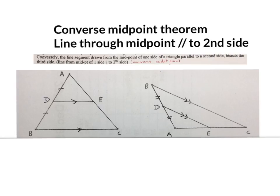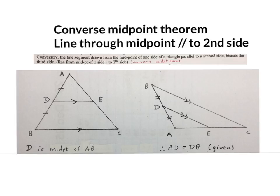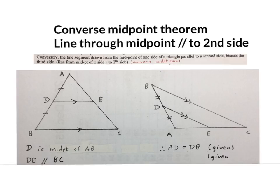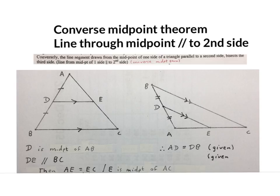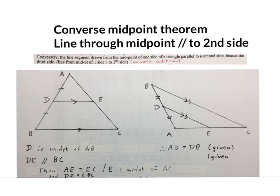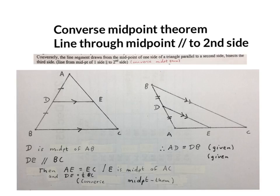That will mean AE is equal to EC. If we see a sketch like this we will write 'D is the midpoint of AB' or 'AD is equal to DB — given.' Then we write 'DE is parallel to BC — also given.' Then we write 'AE is equal to EC' (E is the midpoint of AC — not frequently used) and 'DE is half of BC.' Your reason must be: converse midpoint theorem.